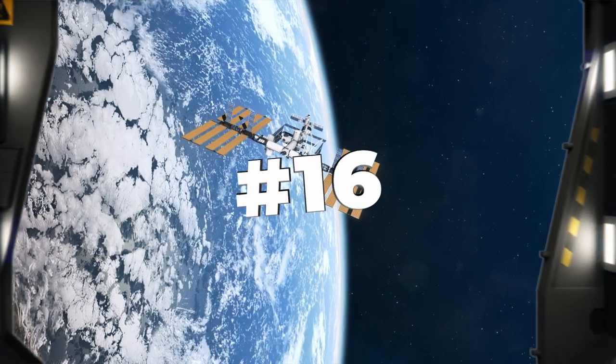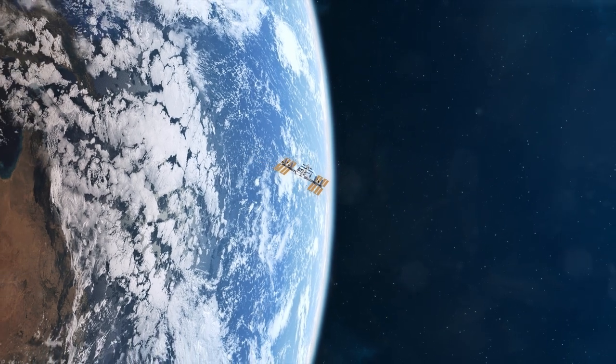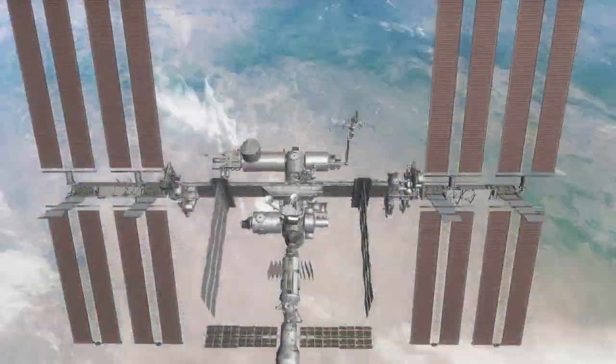Number 16. The International Space Station is the largest human-made structure in space and orbits the Earth about every 90 minutes.